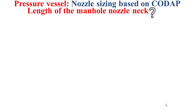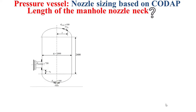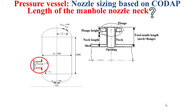Now for the length of the main hole nozzle neck — the nozzle neck here is highlighted in red. As you can see, I have a total nozzle length, the flange height, and the neck length. Obviously, the neck length will be the total nozzle length minus the flange height. For the total nozzle length, it is equal to 350 millimeters as stated by the data related to the operating conditions of the pressure vessel.